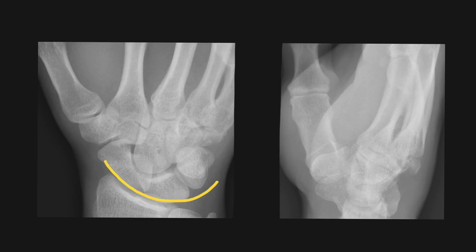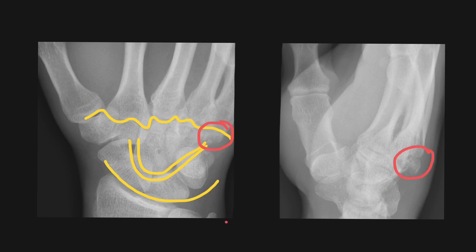On this lateral and oblique view of the wrist, when we draw the carpal arcs they seem in line, however there seems to be an abnormality at the region of the hamate, and the lateral confirms a hamate fracture.